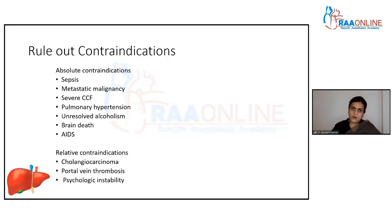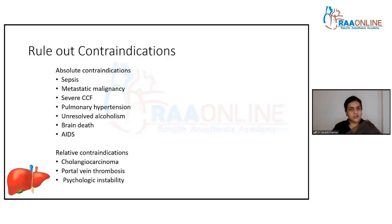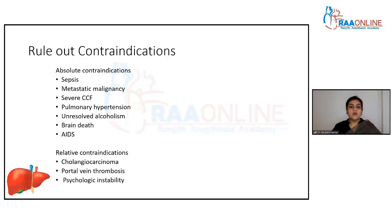Unresolved alcoholism is a contraindication because if the patient is unable to abstain, they will start drinking again and jeopardize the new liver. Brain death is also a contraindication as transplant will not help them, and a diseased donor organ would be denied to someone else who could benefit.